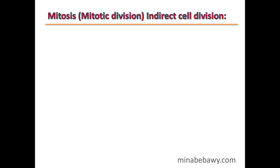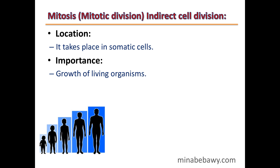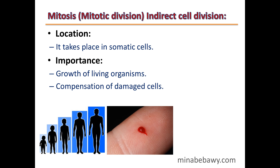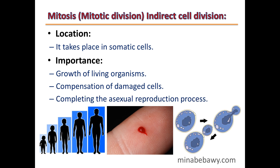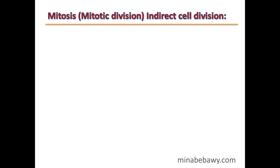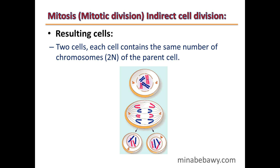We will start by studying mitotic cell division. Its location: it takes place in somatic cells. Its importance: mitosis helps in growth of living organisms, compensation of damaged cells, and completing the asexual reproduction process. Resulting cells: two cells result from mitotic cell division, each containing the same diploid number of chromosomes, 2N, as the parent cell.